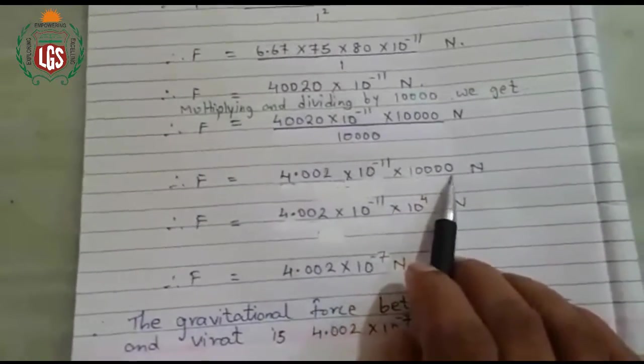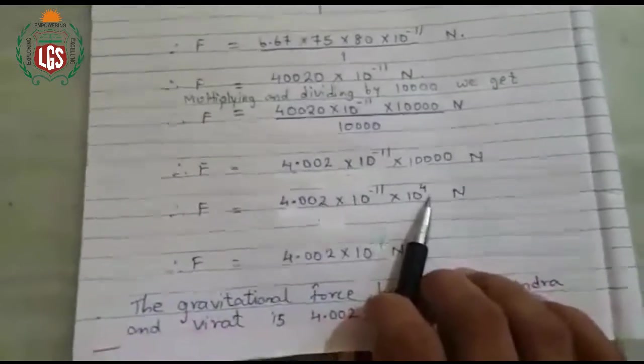Why 10 raise to 4? Because see here, 1, 2, 3, 4. Four zeros are there, so 10 raise to 4 Newton.